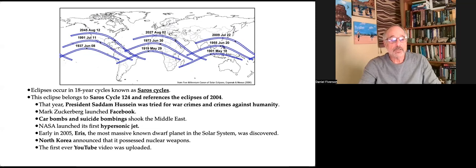Early in 2005, still under the influence of the last eclipse, Eris, the most massive known planet in the solar system, was discovered. North Korea announced it possessed nuclear weapons, and the first ever YouTube video was uploaded. And as you can see, there are direct correlations to all of these events again right now.